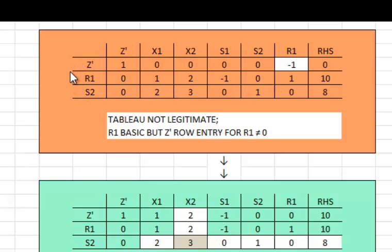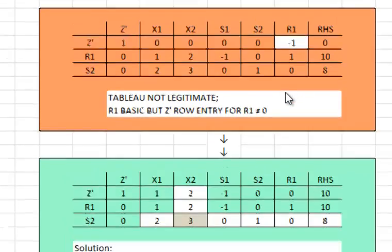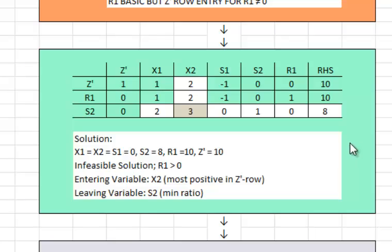That will cause this value to become 0 and it will of course make changes in the other parts of the problem. The following tableau is a legitimate tableau. It has all the identity matrix elements under R1 and under S2 which are our basic variables.